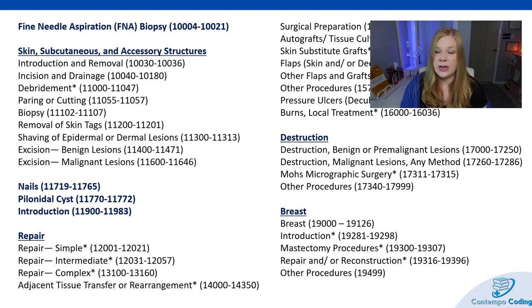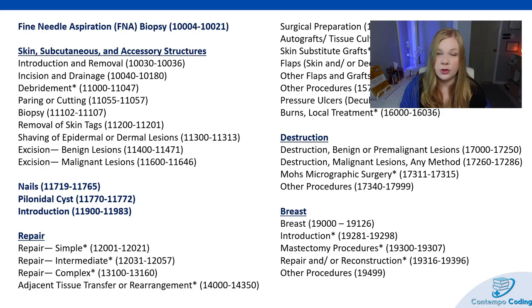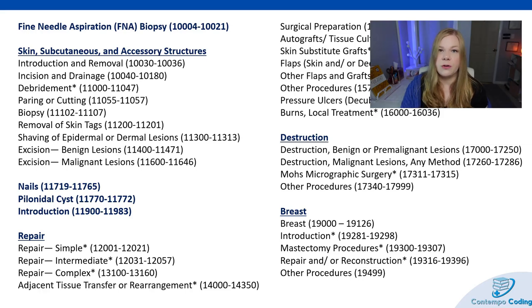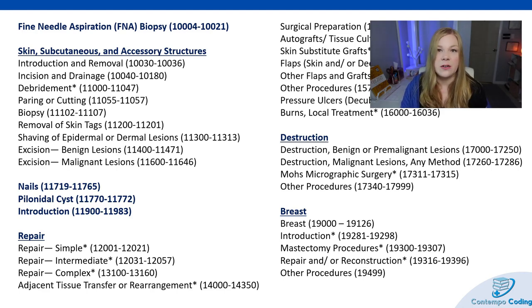Then we get into excision codes. We have excision of benign lesions and excision of malignant lesions, which means we may need to look at a pathology report to determine if the lesion was benign (non-cancerous) or malignant (cancerous). All excision codes are coded based off of benign or malignant status, as well as the location and size of the lesion for proper code selection.